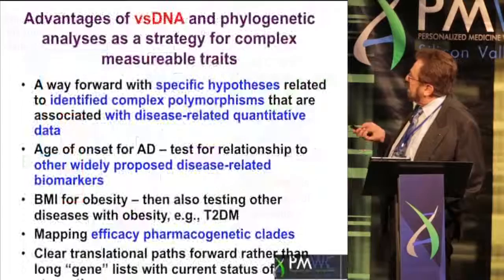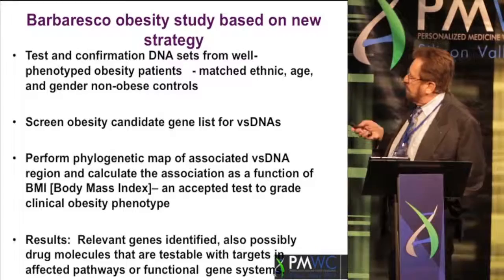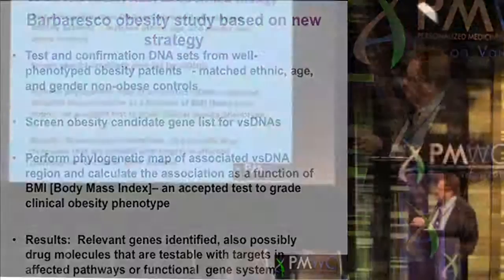There are a lot of advantages to doing this, and we've done it in a number of different diseases. One of them is obesity — essentially, instead of using age of onset, we use body mass index as the continuous variant.